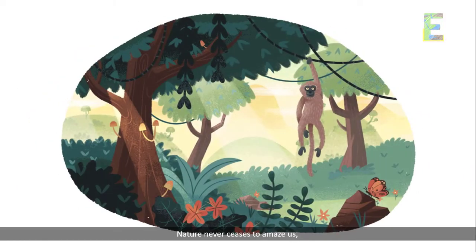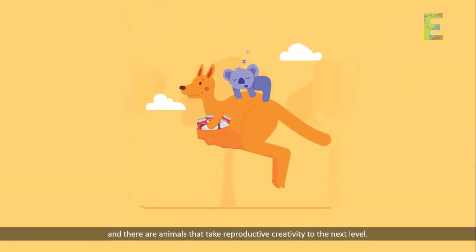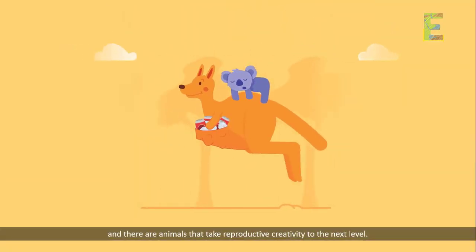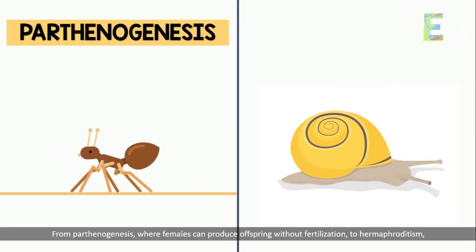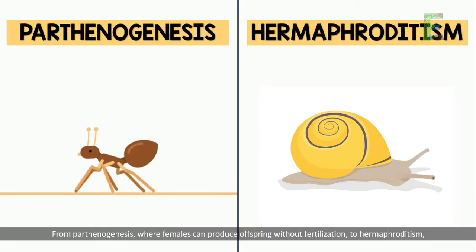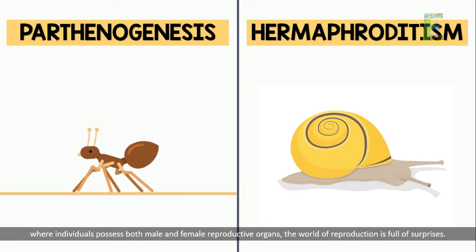Nature never ceases to amaze us, and there are animals that take reproductive creativity to the next level. From parthenogenesis, where females can produce offspring without fertilization, to hermaphroditism, where individuals possess both male and female reproductive organs — the world of reproduction is full of surprises.